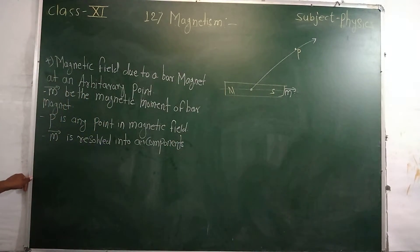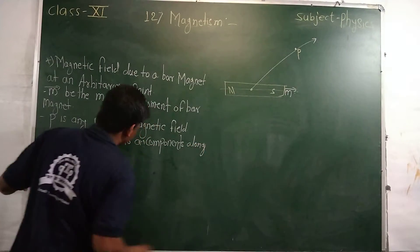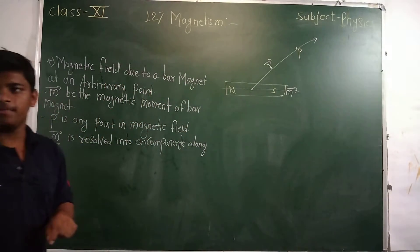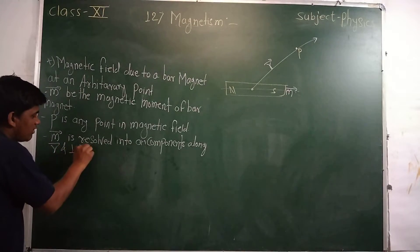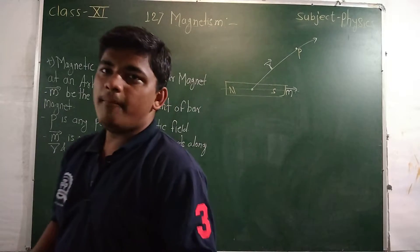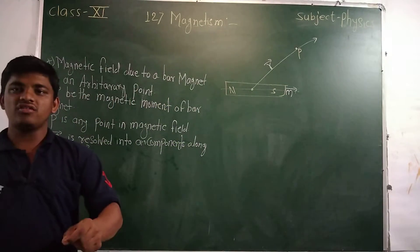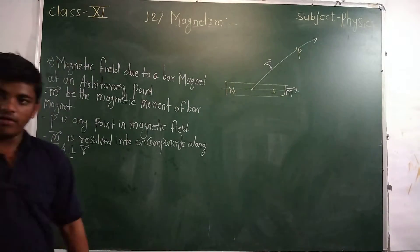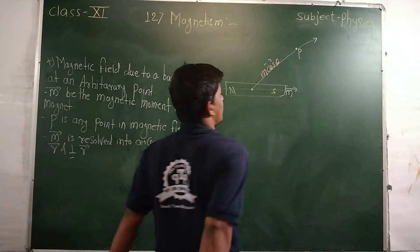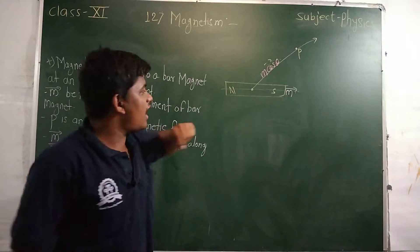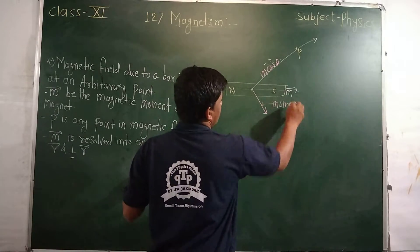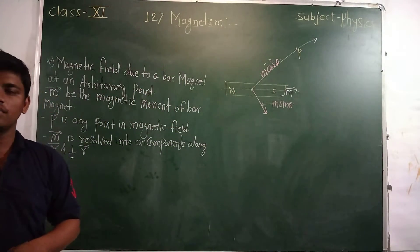The magnetic dipole moment is resolved into two components: one component is along R bar, and another is perpendicular to R. R bar is the distance from the center of the bar magnet to the point P. The component along R is m cosθ, and the component perpendicular to R is m sinθ.